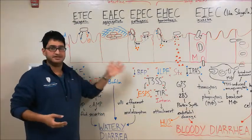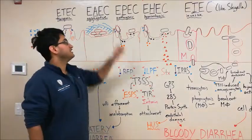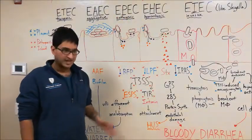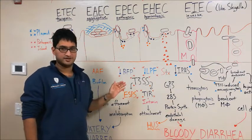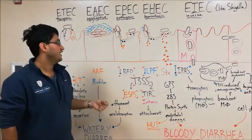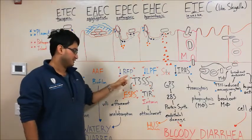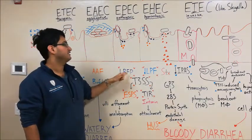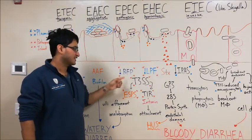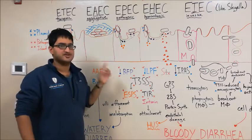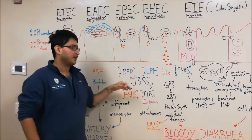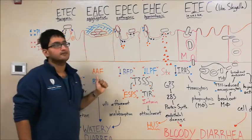So now let's talk about EPEC, or enteropathogenic E. coli. Similar to the other E. coli we talked about, this E. coli is going to express a unique pilus that lets it adhere to enterocytes. In this case, the pilus is BFP, or bundle-forming pilus, as indicated here in blue. Notice that this protein is surrounded by red stars, indicating that this protein is encoded in a pathogenicity island in the bacterial genome itself, as opposed to a plasmid like we saw earlier with ETEC.